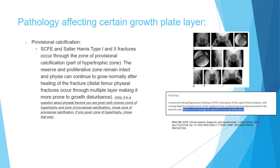The zone of provisional calcification is affected by several pathologies. Physical injuries such as Salter-Harris 1 and 2 and slipped epiphysis occur through the zone of provisional calcification. This is important because it means the reserve and proliferative zones remain intact, allowing the child to continue growing after healing of the fracture.